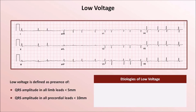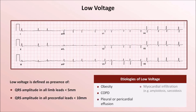Therefore, etiologies of low voltage include obesity, COPD in which the hyperinflated lungs act as insulation, a pleural or pericardial effusion, myocardial infiltration, and hypothyroidism. In hypothyroidism, proposed explanations include occult pericardial effusion and/or occult ascites, and soft tissue edema of the chest wall, among others.